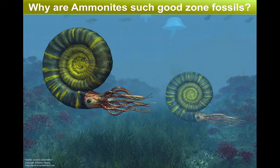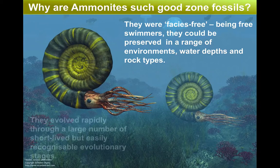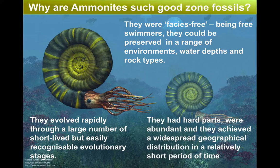These animals make such good zone fossils for a number of reasons. They could swim freely around in the ocean and can therefore be preserved in a range of different environments and sediments. Their evolution was rapid — a large number of species evolved but then became extinct relatively quickly. Each of these stages is also easily recognised and identified. And they make superb fossils: they had hard parts, occurred in vast numbers, and were spread all over the globe, so they're very common fossils to find.